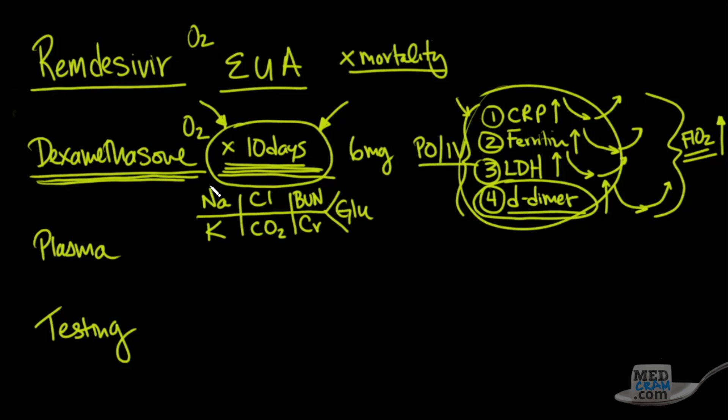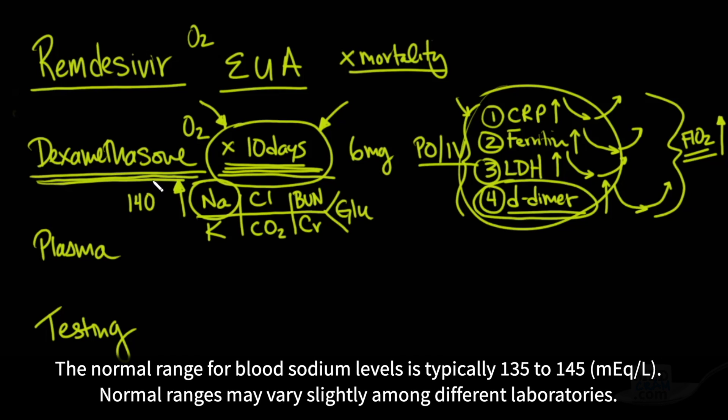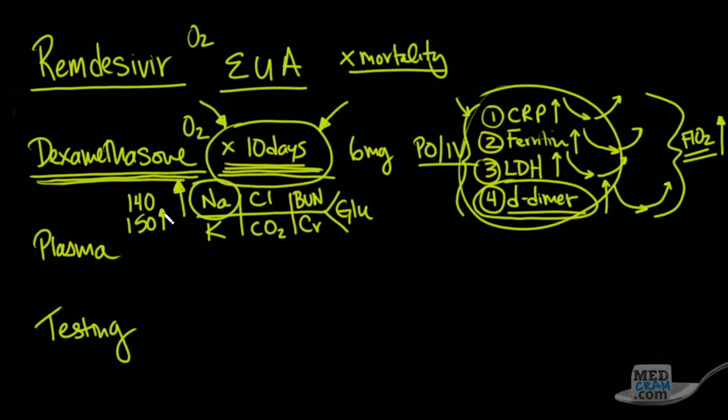For example, when a patient is on the ventilator with COVID-19, they're breathing rapidly. In some cases, we have the ventilator set to 20 or 30 breaths per minute. Because of that, they're breathing out a lot of moisture. That's a lot of free water loss, and if you don't replace that, the total body concentration of everything, including sodium, will start to rise. You'll see sodium concentration, normally around 140 to 145, go as high as 150 or even higher. You need to pick this up and replace that free water.